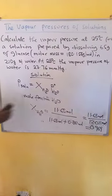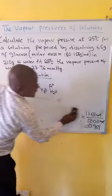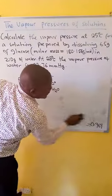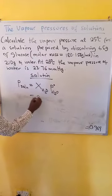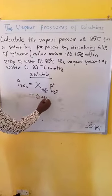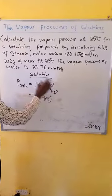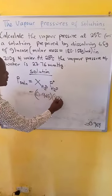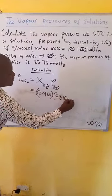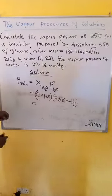Then now, we need to replace in the formula for Raoult's Law the mole fraction of water, which is 0.969, then the vapor pressure of water given is 23.76 millimeters mercury. Then, we need to multiply.